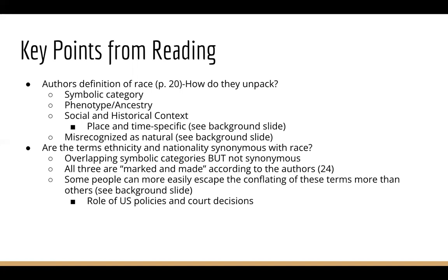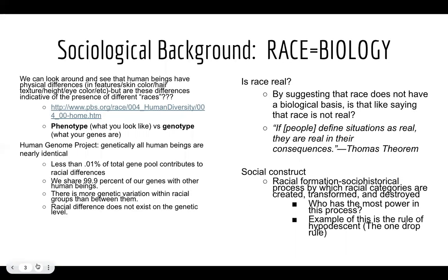This relates to the point that race — particularly race in the United States — has a specific social and historical context. How we label people, the labels we assign, and the criteria we establish for assigning racial labels and identities have varied over time. There is a slide that addresses the constructed nature of race.